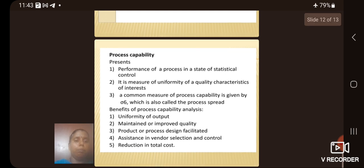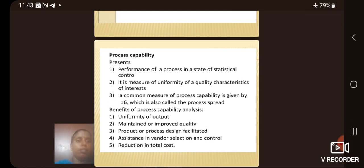Then next we see the process capability. Process capability is performance of a process in a state of statistical control. It is measure of uniformity of a quality characteristics of interest. A common measure of process capability is given by 6 sigma which is also called the process spread.